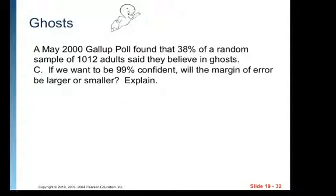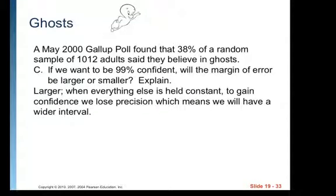If I want to be 99% confident, will the margin of error be larger or smaller? So I want to be more sure I capture the true proportion. So it's going to be larger. When everything else is held constant, to gain confidence, we lose precision, which means we have a wider interval.